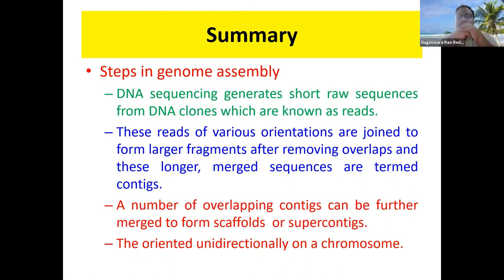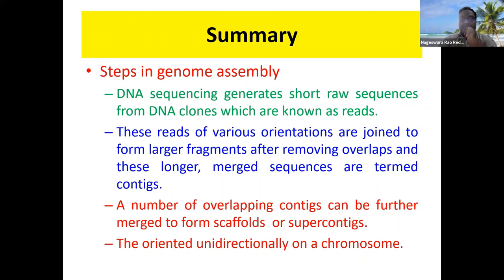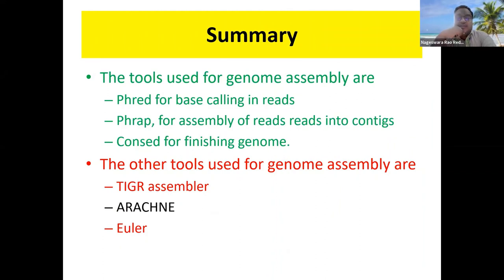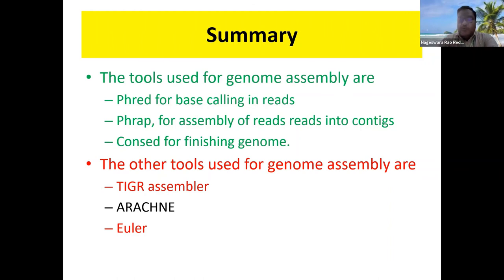In summary, DNA sequencing generates short raw sequences from DNA clones known as reads. These reads of various orientations are joined to form larger fragments after removing overlaps, and these longer merged sequences are known as contigs. A number of overlapping contigs can be further merged to form scaffolds or supercontigs, giving an oriented unidirectional chromosome. The tools used are PHRED for base calling, PHRAP for assembly of reads into contigs, and Consed for finishing the genome. For whole genome assembly, tools include the TIGR assembler, ARACHNE, and Euler.